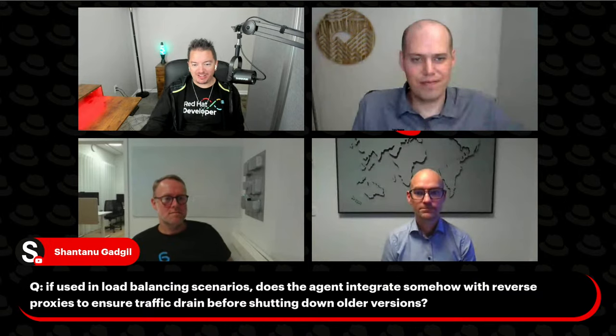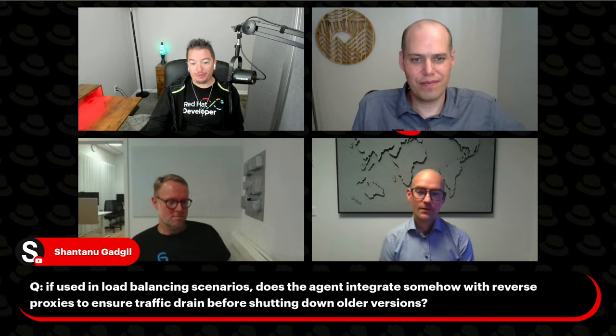We had a last-minute question from Shantanu: if you're using this in a load-balanced scenario, does the agent integrate with a reverse proxy to ensure traffic drain before shutting down the older version? Our system comes with a built-in DNS. When the instance went into delayed shutdown and we brought it up on a new host, the delayed shutdown instance is removed from DNS and the new version is added to DNS. Any client trying to resolve that particular instance will get the new version back from DNS. That can in turn be integrated with a reverse proxy like HAProxy. We don't ship with any reverse proxies, but our customers typically bring what they like and integrate with that.